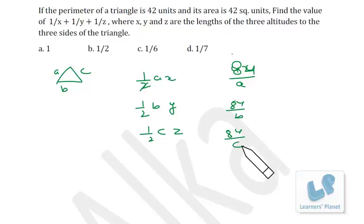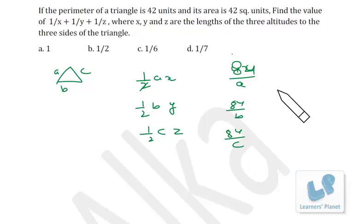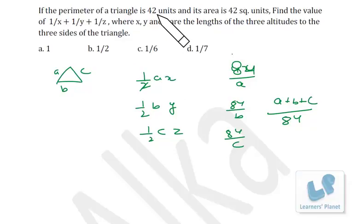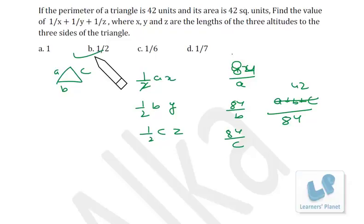So x = 84/a, y = 84/b, z = 84/c. Therefore 1/x = a/84, 1/y = b/84, 1/z = c/84. Their sum is (a+b+c)/84. The perimeter a+b+c = 42, so the expression equals 42/84 = 1/2.